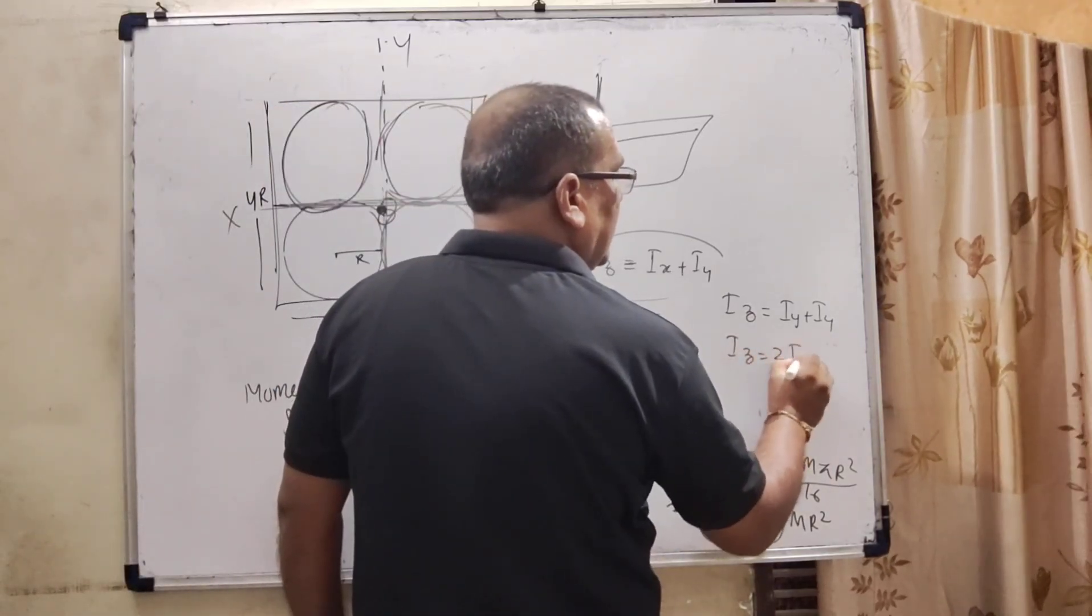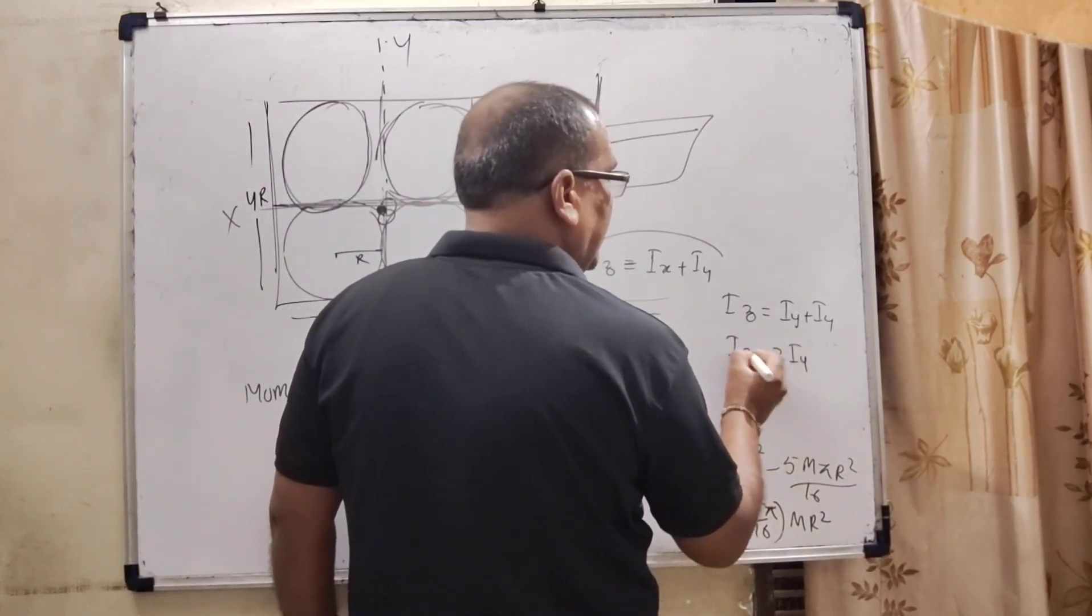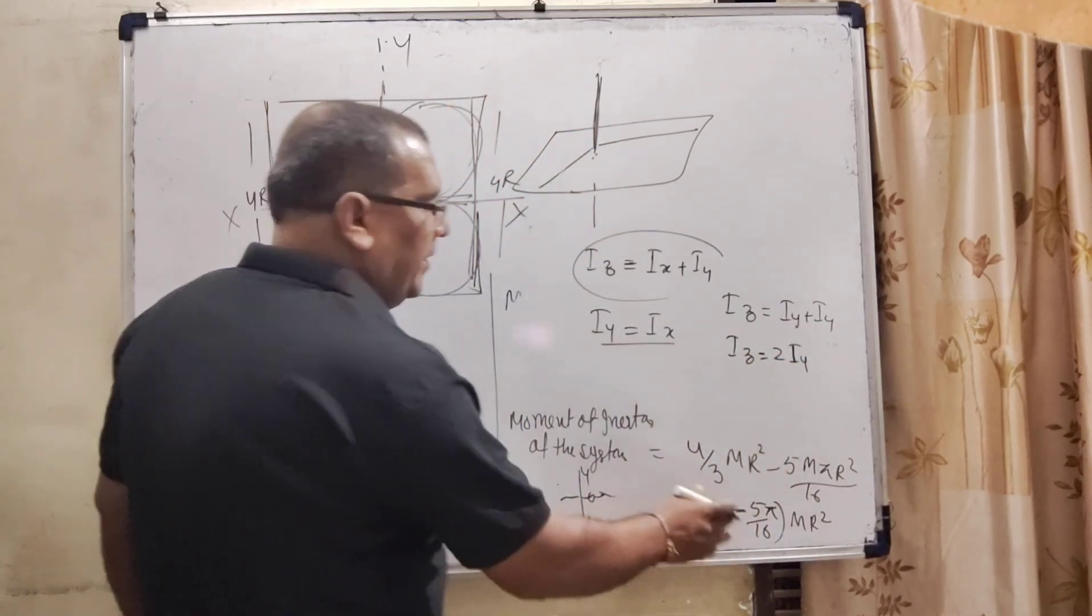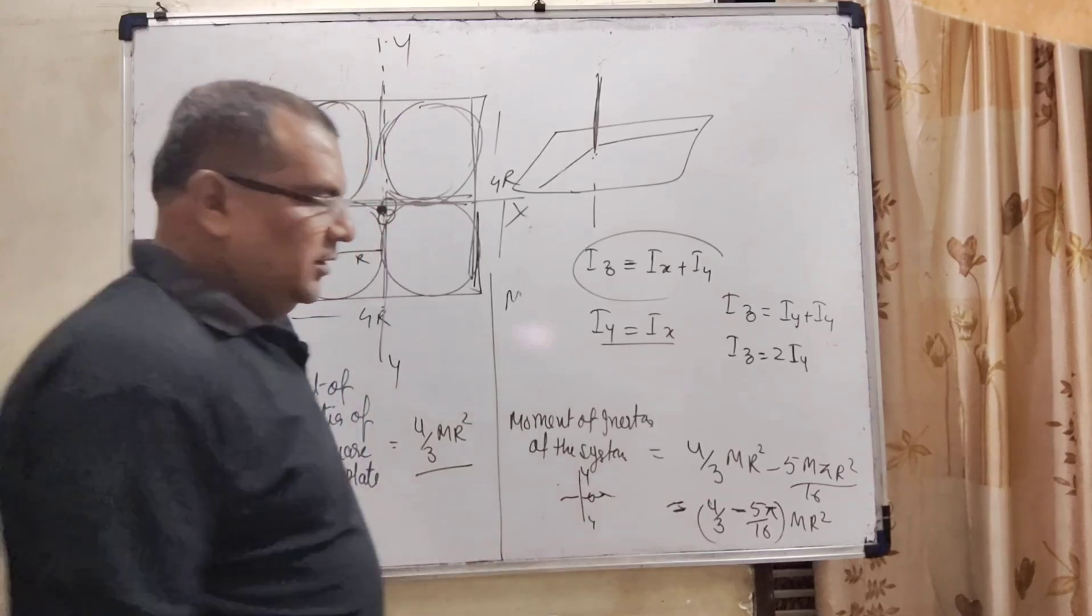Iz equals twice Iy. Moment of inertia of Z axis equals twice moment of inertia of Y axis. Multiply by 2 to get the answer.